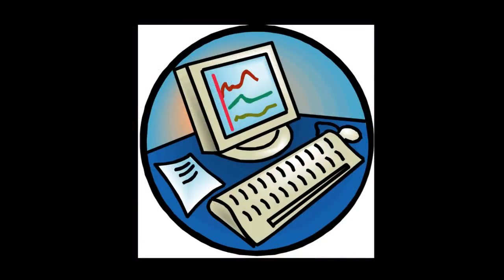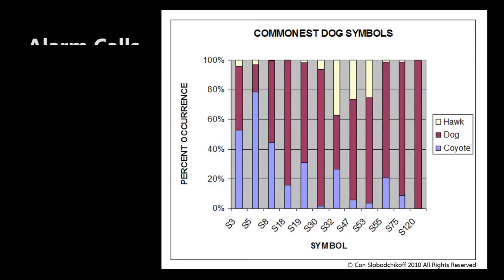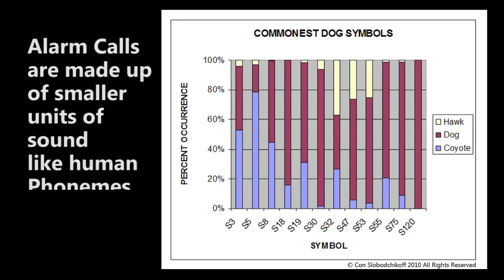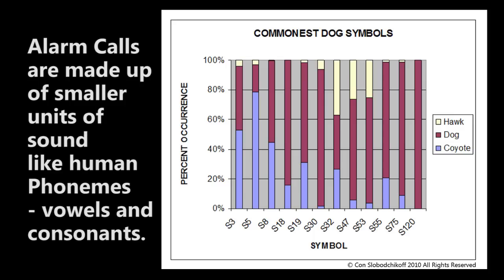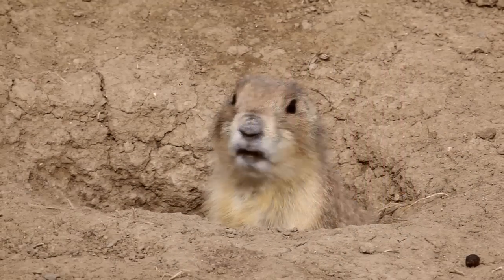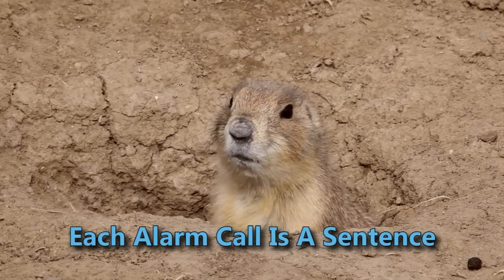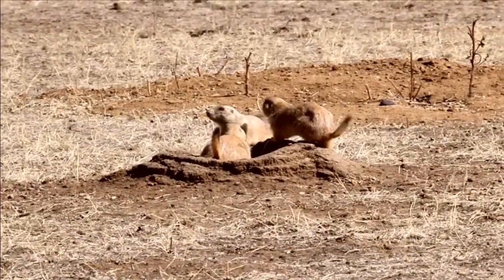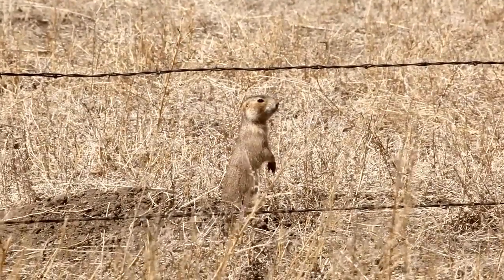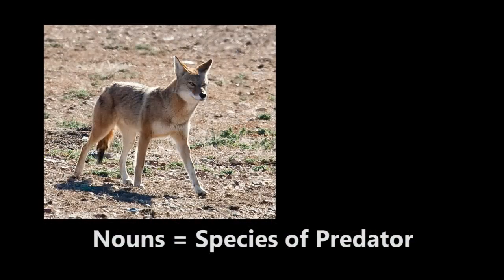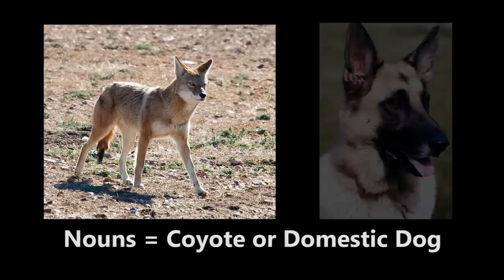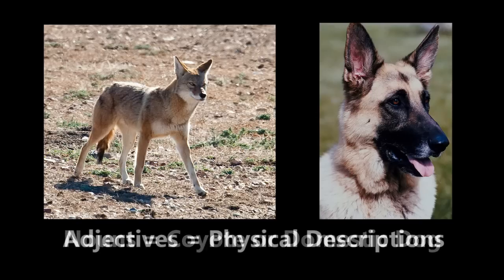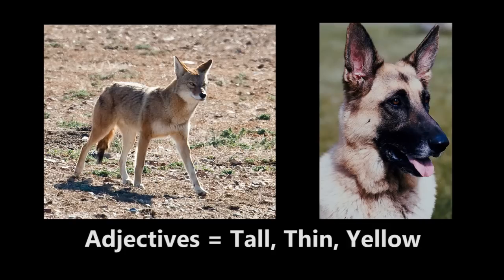Using computer analysis, we have shown that the alarm calls are made up of smaller units of sound, very much like human phonemes, such as vowels and consonants. So each alarm call of a prairie dog is equivalent to a human sentence composed of nouns and adjectives and smaller units of sounds that make up these nouns and adjectives. The nouns are the species of predator, such as coyote or domestic dog. The adjectives are the physical descriptions of the predators, such as tall, thin, or yellow.